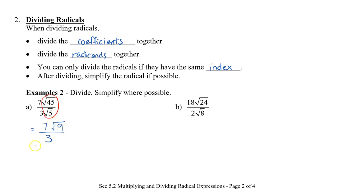I'm going to place √9 in the numerator. We can say that √9 is 3. Instead of multiplying it by the 7, I'm going to leave it as 3 because I noticed that I have a 3 in the denominator. So the 3s can cancel off, and therefore I have 7.